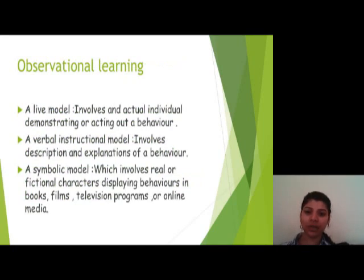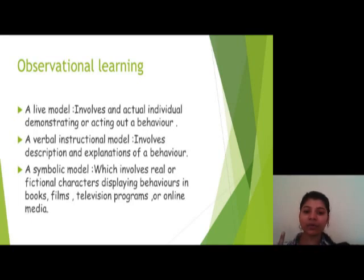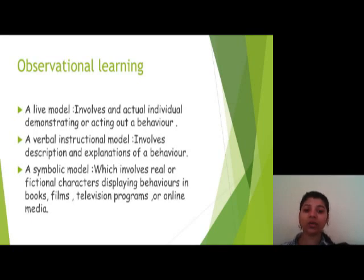Social learning theory draws heavily on the concept of modeling. Bandura outlines three types of modeling stimuli: live models, verbal instructions, and symbolic. Live models involve a person demonstrating the desired behavior. Verbal instructions involve an individual describing the desired behavior in detail and instructing the participant on how to engage in the behavior. Symbolic modeling occurs by means of media including movies, television, internet, literature, and radio — stimuli can be either real or fictional characters.